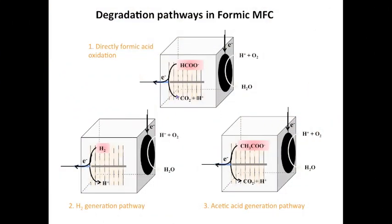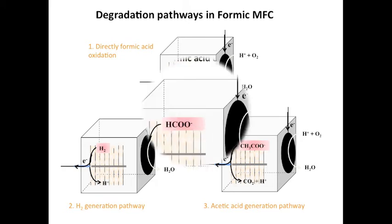We're going to show you a couple of slides to talk about some of our results. One reason for the low power densities seen with formic acid could be that most exoelectrogens cannot use formic acid as a carbon source, such as Geobacter sulfurreducens.